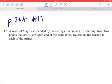Hi everyone, let's take a look at number 17 on page 364. A mass of 5 kg is suspended by two strings, 24 cm and 32 cm long, from two points that are 40 cm apart and at the same level. Determine the tension in each of the strings.